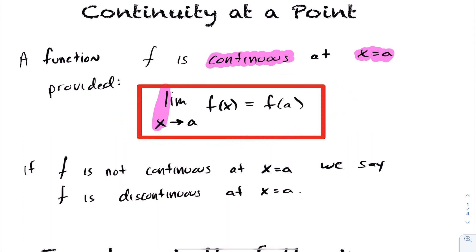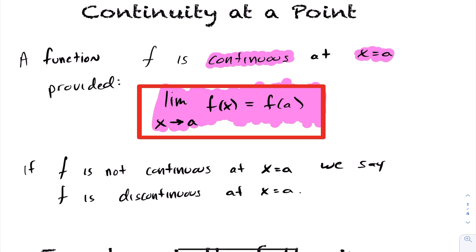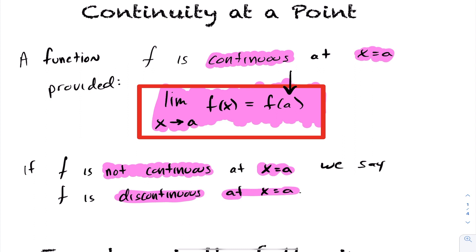There's a lot being said in this expression. First, the limit as x approaches a of f at x implies that the limit itself exists — meaning the limit from the left and right must equal. On top of that, it has to equal the function at that value a. When a function is not continuous at x equals a, we just use the term discontinuous at that point.